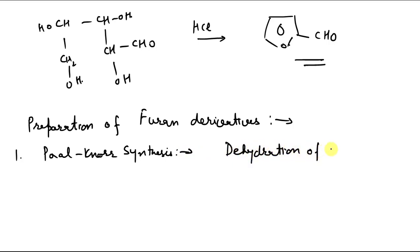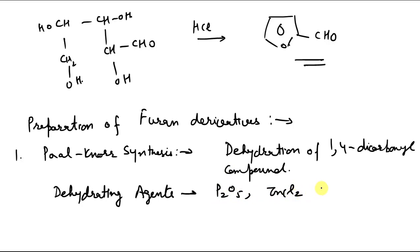Dehydration of 1,4-dicarbonyl compound. So basically, dehydrating agents that are used. Dehydrating agents that can be used: P2O5 can be used, phosphorus pentoxide. Zinc chloride can be used, or we can also use sulfuric acid. This can be used as a dehydrating agent. Now let us write the reaction.